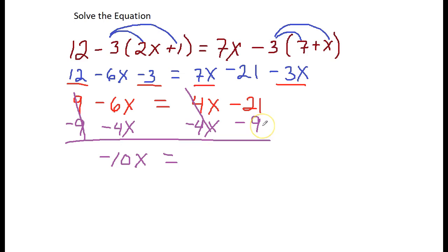My next step is I want to isolate the x all by itself. That means get rid of the negative 10, so I divide. Since it's been negative 10 times the x, the opposite of multiply by negative 10 is divide by negative 10. I do the same thing to both sides of the equal sign.